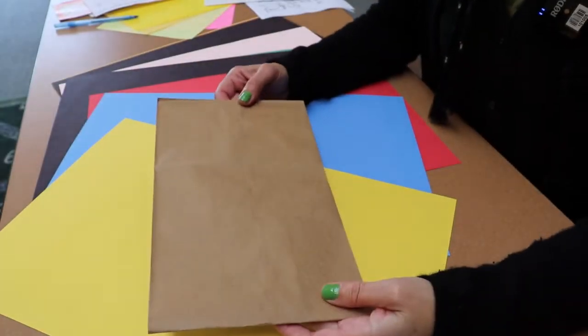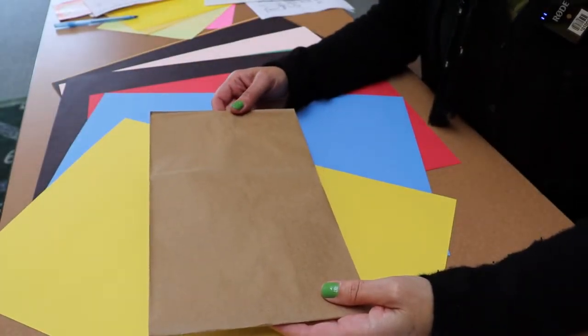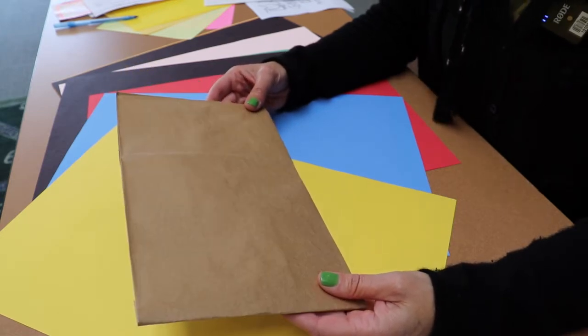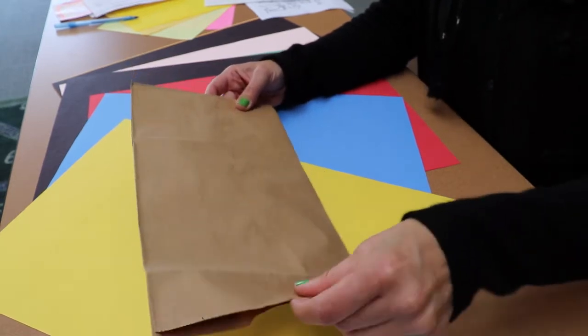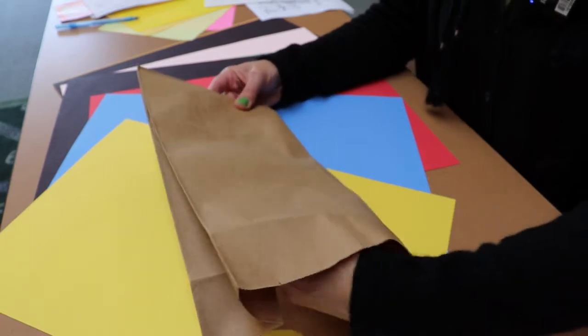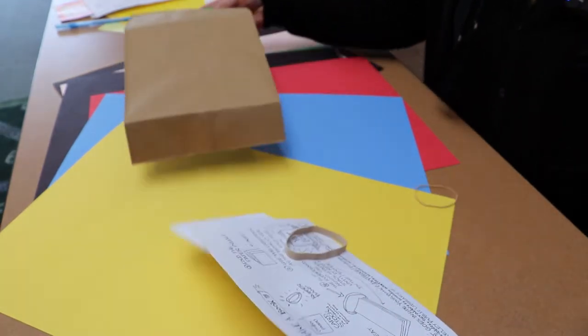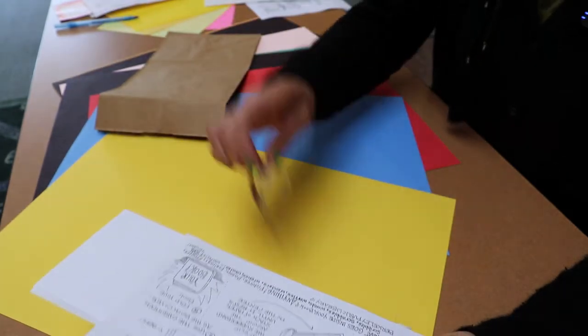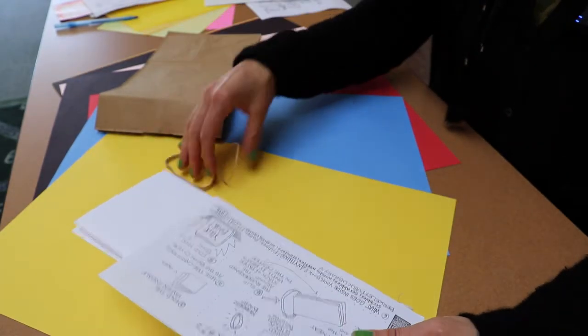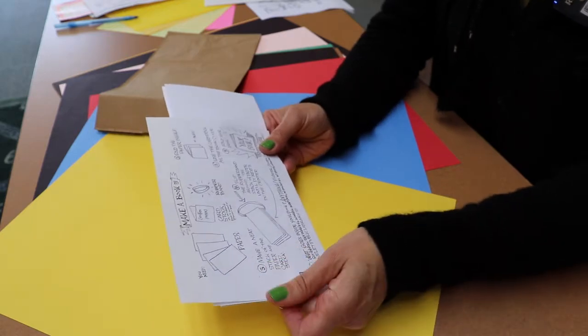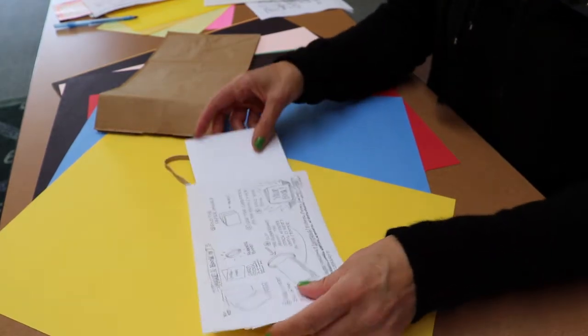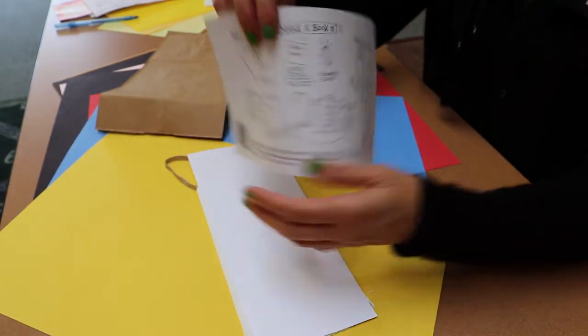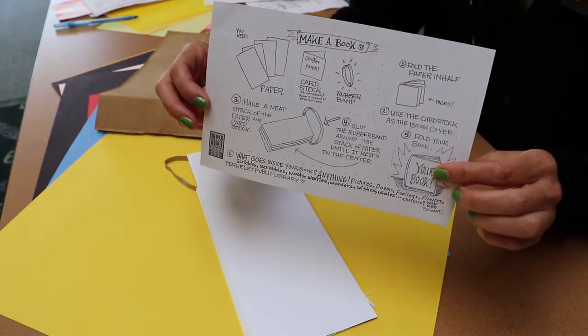So I just stopped by the Berkeley Public Library and picked up my Take and Make project. Let's see what's inside. Oh, looks like a couple rubber bands, some paper held together by a paper clip. So our project is to make a book.